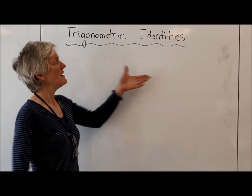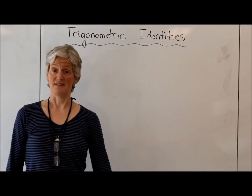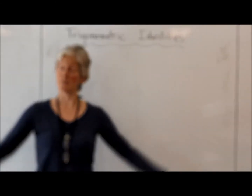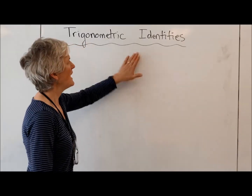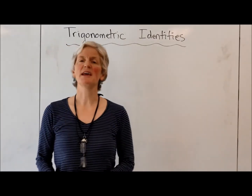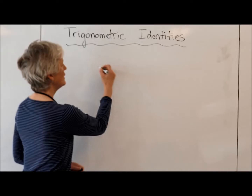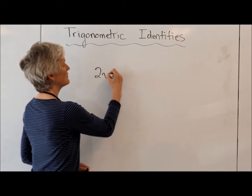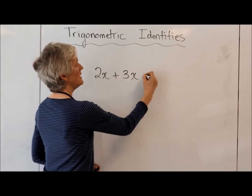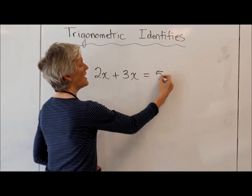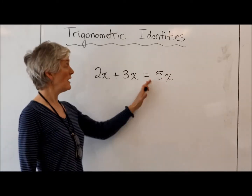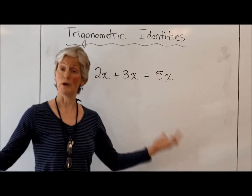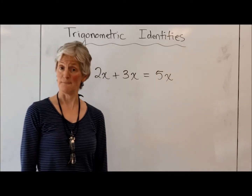Let's talk about trig identities. What is an identity, you may ask? Well, an identity is something in math that is always true. For example, 2x plus 3x equals 5x. That is something that is true for all x. We could call that an identity.